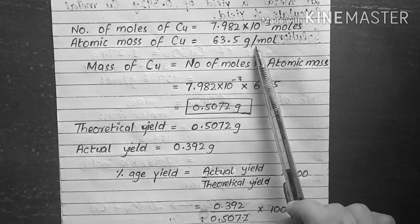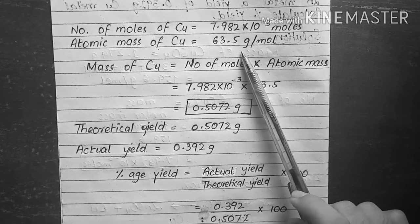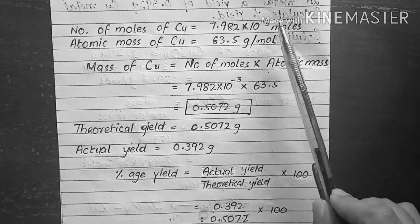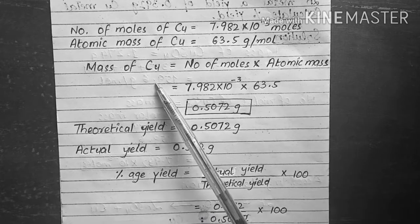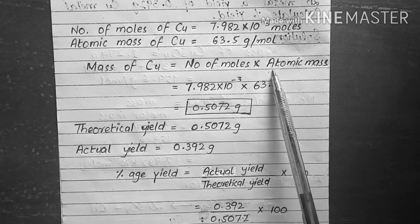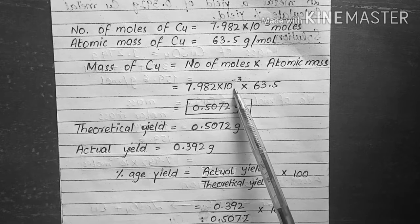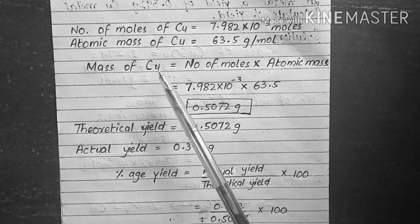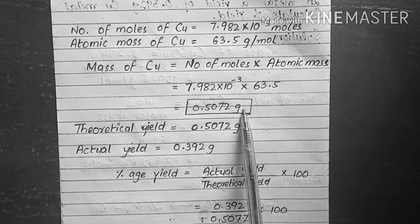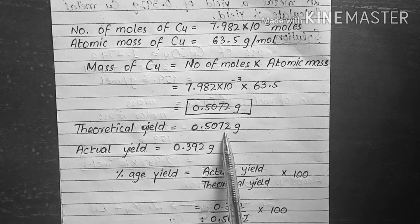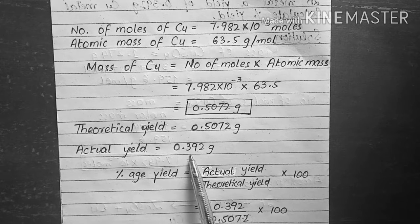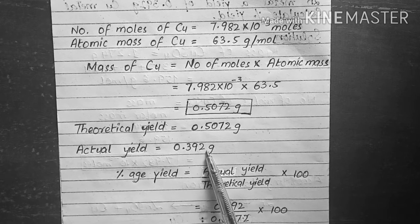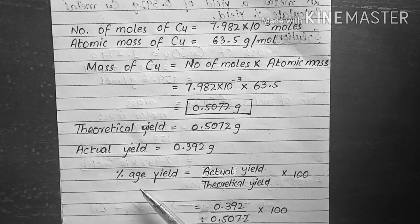The number of moles of copper is 7.982 × 10⁻³ moles. Multiplying by the atomic mass of 63.5 grams per mole gives a mass of 0.5072 grams of copper. This value is our theoretical yield. The actual yield was given in the question as 0.392 grams of copper. Now we have both values needed to calculate the percentage yield.